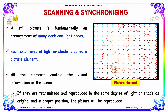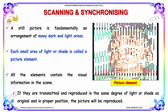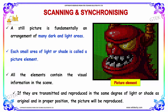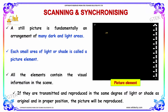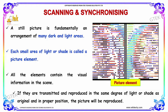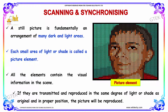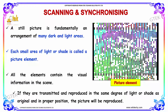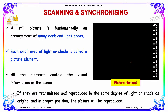A still picture is fundamentally an arrangement of many dark and light areas. Each small area of light or shade is called a picture element. All the elements contain the visual information in the scene. If they are transmitted and reproduced in the same degree of light or shade as original and in proper position, the picture will be reproduced.